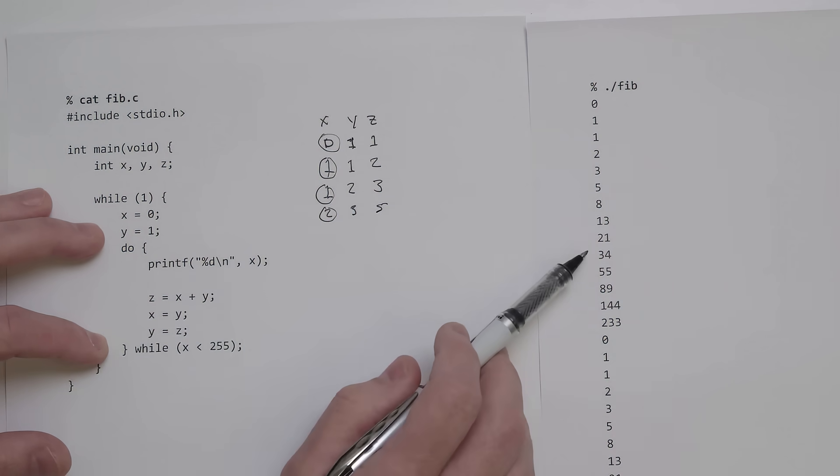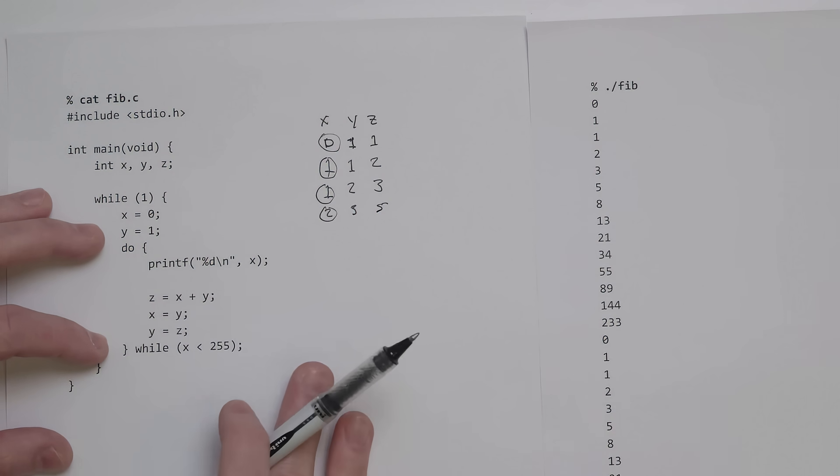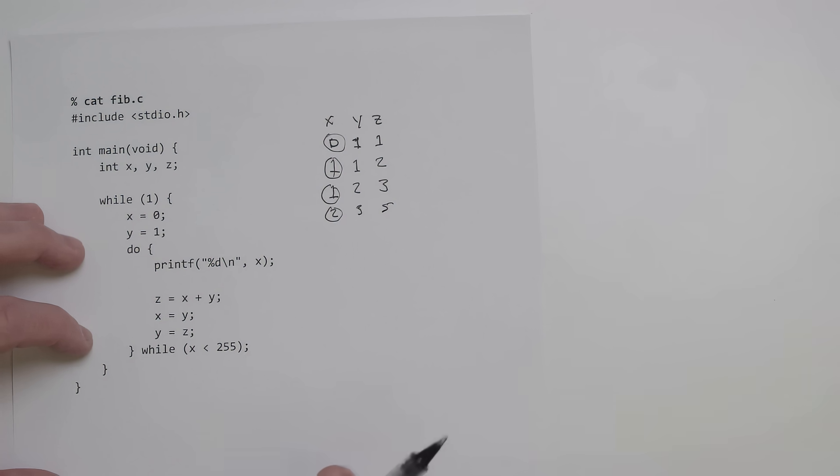So 0, 1, 1, 2, and it keeps going like that. That's how this program works, it prints out Fibonacci numbers. But what happens when we compile this?